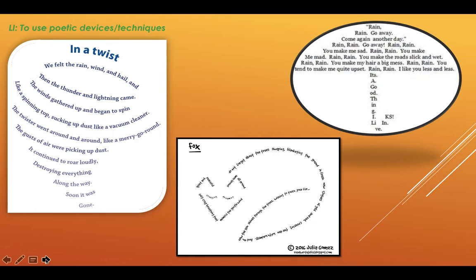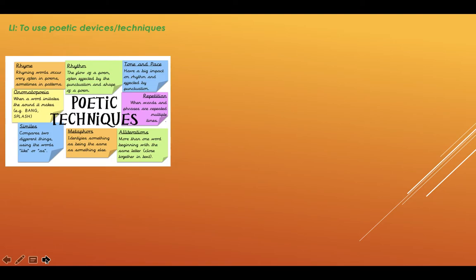So before we start, here are our poetic techniques — you want to use them in your poem. Rhyme if you can, though you don't have to. Onomatopoeia if you can include it. Similes — definitely want to see some similes, even if there's only one. A metaphor — it'd be great to see at least one metaphor in your poem. Alliteration, repetition — hopefully those will appear in your poetry.